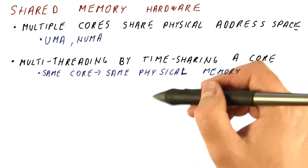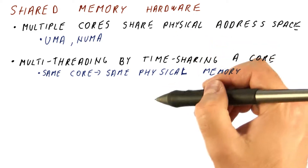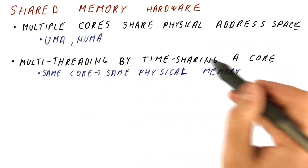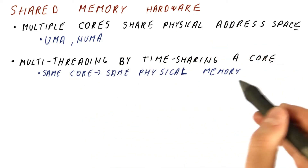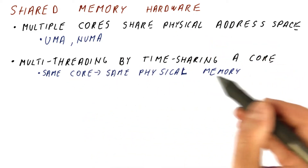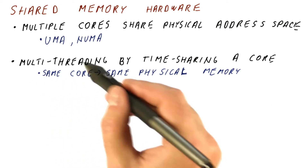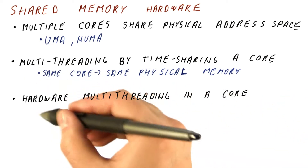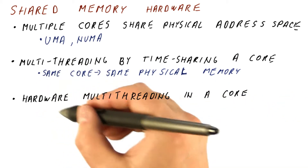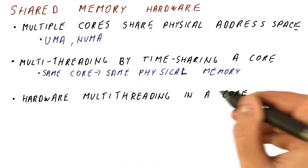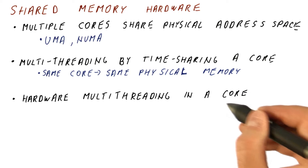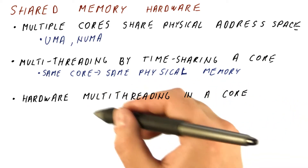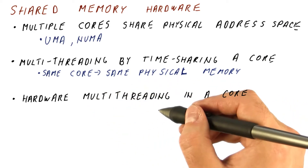The question is, is there something in between? Because a single time-shared core is not really capable of benefiting from multi-threading. We can have hardware multi-threading support in one core that actually tries to benefit from there being multiple threads.